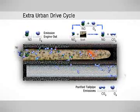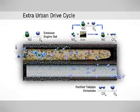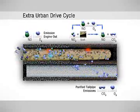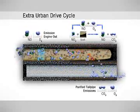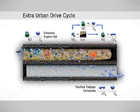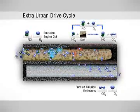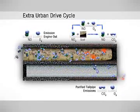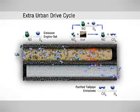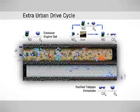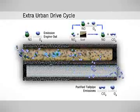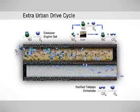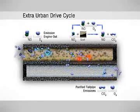The catalyst can oxidize NO, which arises as an intermediate product during the soot burn-off, back to NO2. A circular process takes place that increases the rate of soot burn-off in the catalyzed filter.